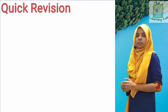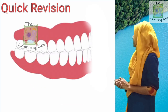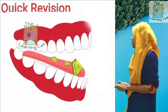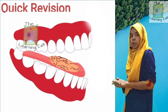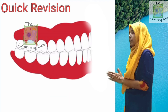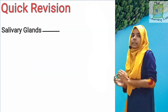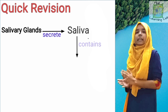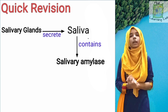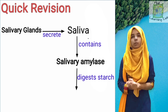Let us now summarize what happens to the food inside the mouth. Teeth cause mechanical breakdown of food into smaller particles. The tongue helps in mixing the food with saliva and helps in swallowing the food. Saliva contains salivary amylase, which converts the starch present in food into maltose.